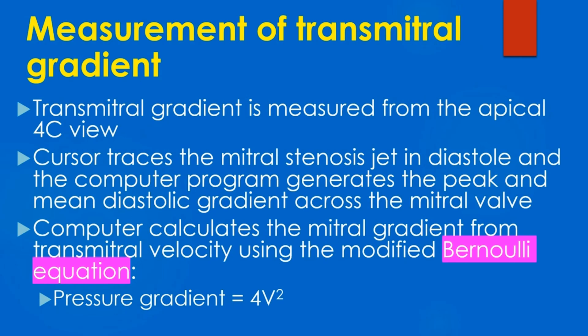Transmitral gradient is measured from the apical four-chamber view. The cursor traces the mitral stenosis jet in diastole and the computer program generates the peak and mean diastolic gradient across the mitral valve. The computer calculates the mitral gradient from the transmitral velocity using the modified Bernoulli equation, which states that the pressure gradient equals 4V squared, where V is the velocity.